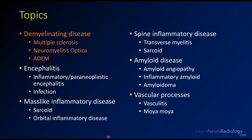There are going to be about six divided lectures. In this one today, we're going to talk about demyelinating diseases, namely multiple sclerosis, NMO, and ADEM. In some of the other lectures, we'll talk about encephalitis and the common causes of encephalitis, particularly inflammatory encephalitis. We'll have a separate lecture where we'll talk about the mass-like inflammatory diseases.